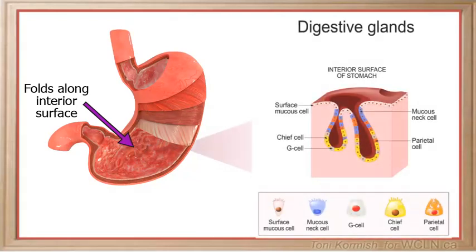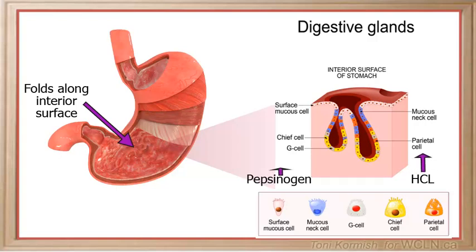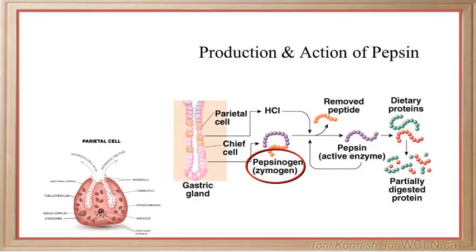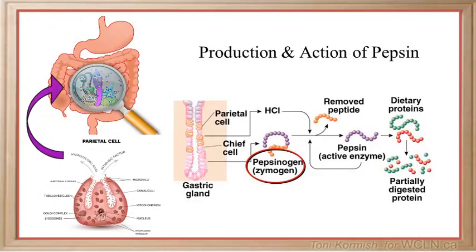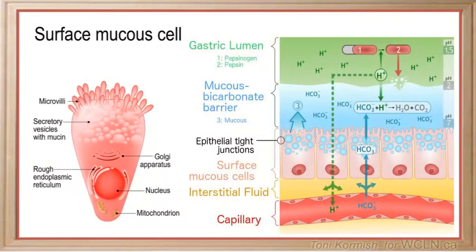The tissues that line the stomach wall contain gastric glands that secrete hydrochloric acid, pepsinogen, and mucus. The hydrochloric acid kills bacteria in the food that you have consumed and converts pepsinogen into pepsin, which is the enzyme that digests proteins. The mucus helps to protect the walls of the stomach from the acidic gastric juices.